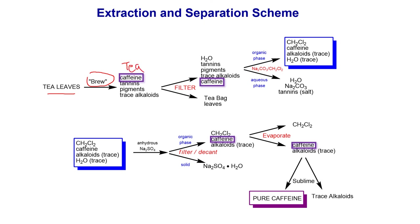The tea solution contains caffeine, tannins, and other alkaloids. You can remove and discard the tea bags, leaving the tea solution in a beaker. Once it's cooled down, you add sodium bicarbonate — a base that will react with tannin, which is an acidic molecule. The base deprotonates tannin to form a tannin salt, which becomes soluble in water.